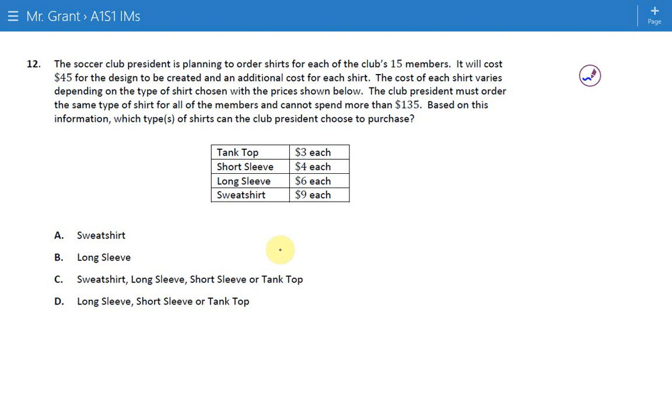Soccer club president is planning to order shirts for each of the club's 15 members. It will cost $45 for the design to be created, and an additional cost for each shirt. The cost of each shirt varies depending on the type of shirt chosen with the prices shown below. So, we have 15 people, $45 just for the design, nothing too bad here.